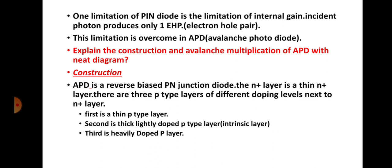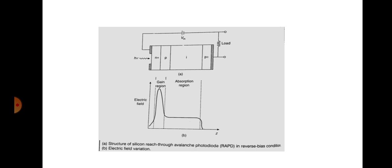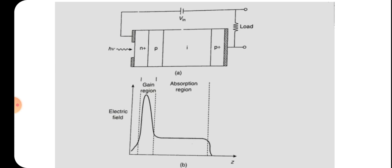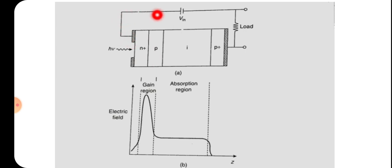This limitation of the PIN diode is overcome in the case of avalanche photodiode, that means APD. The basic structure of the avalanche photodiode consists of a PN junction with n and p regions. There are three layers of p region: the n region, the p region, an intrinsic layer with very low doping, and a heavily doped p-plus region. The n region is also heavily doped and thin. This diode is reverse biased — the positive terminal is connected to the n region and negative terminal to the p region, with a load resistance.